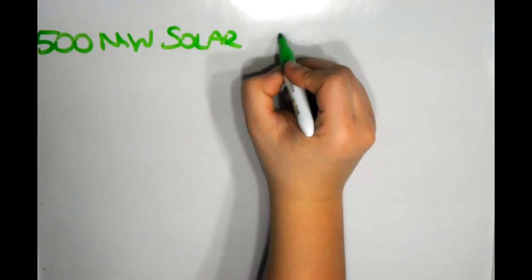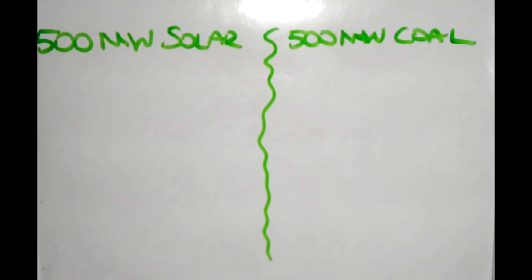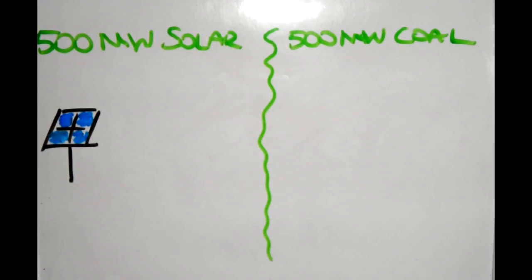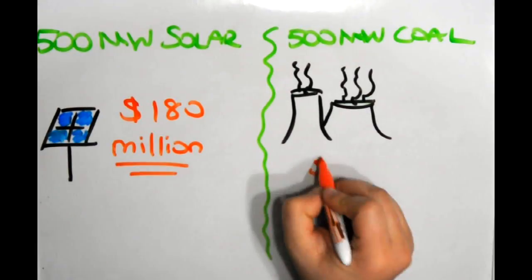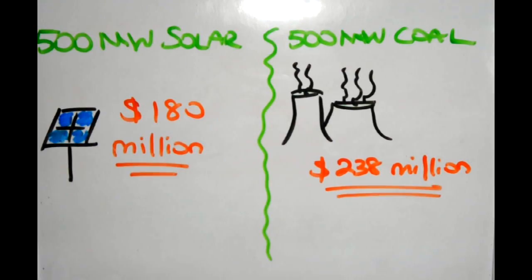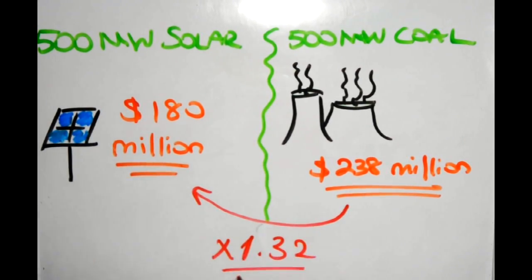Taking in calculations the industrial price, it takes $180 million to construct a 500-megawatt solar plant. However, on average, it costs $238 million to construct a 500-megawatt coal-fired plant. That means it costs 1.32 times less money to construct a solar plant than a coal-fired plant.